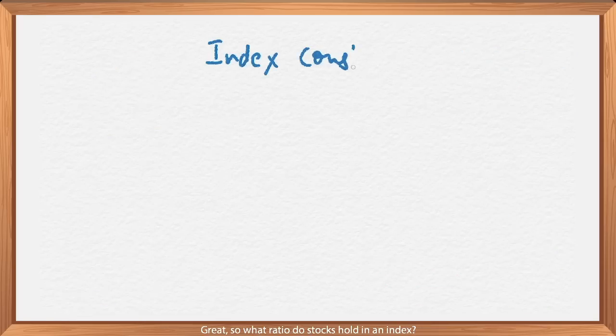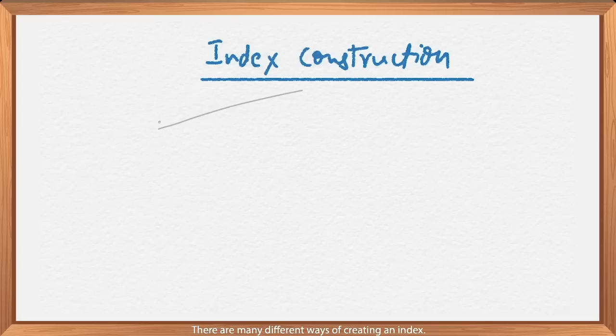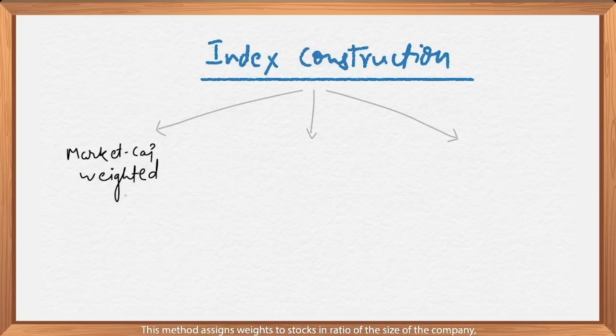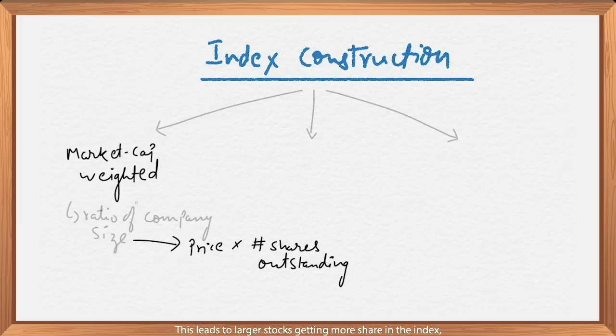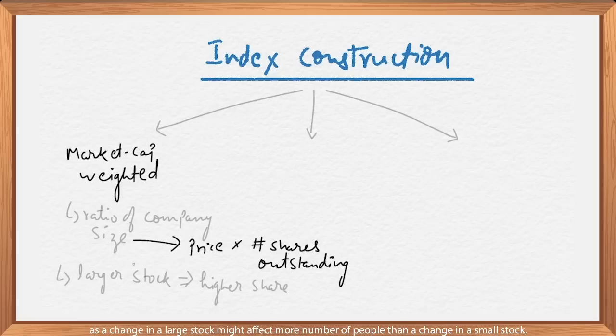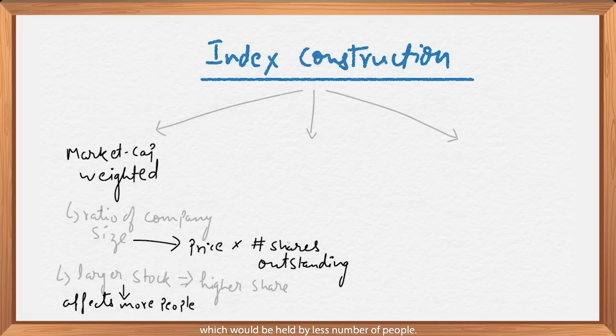Great! So what ratio do stocks hold in an index? There are different ways of creating an index. Some of them are, first, market capitalization weighted. This method assigns weights to stocks in ratio of the size of the company, or put another way, in ratio of stock price multiplied by the total number of shares outstanding. This leads to larger stocks getting more shares in the index, which makes sense as a change in a large stock might affect more number of people than a change in a smaller stock, which would be held by less number of people.